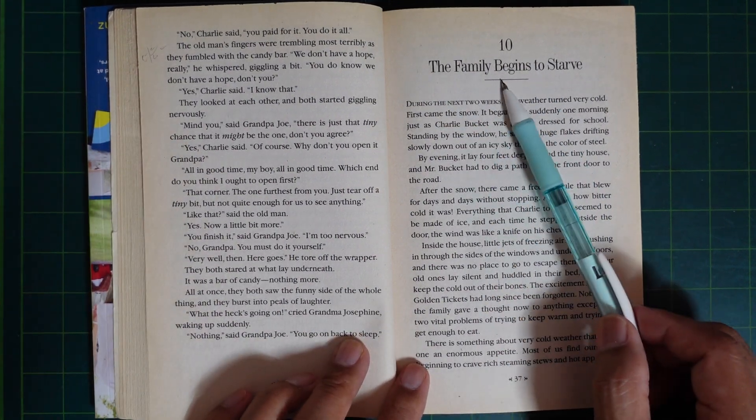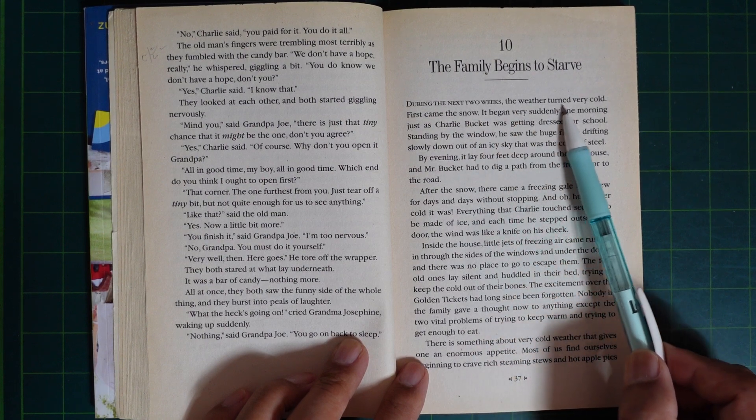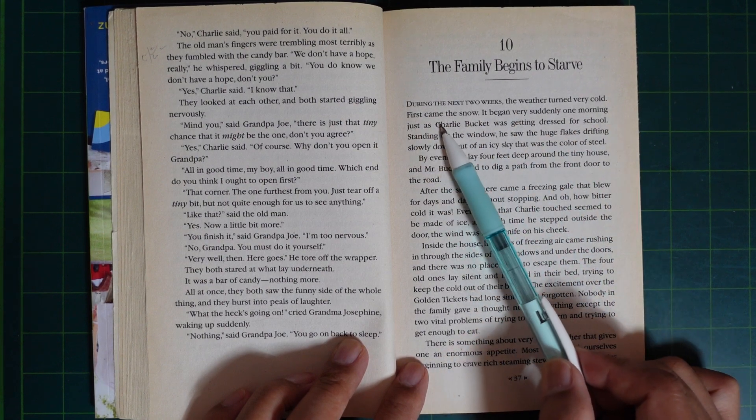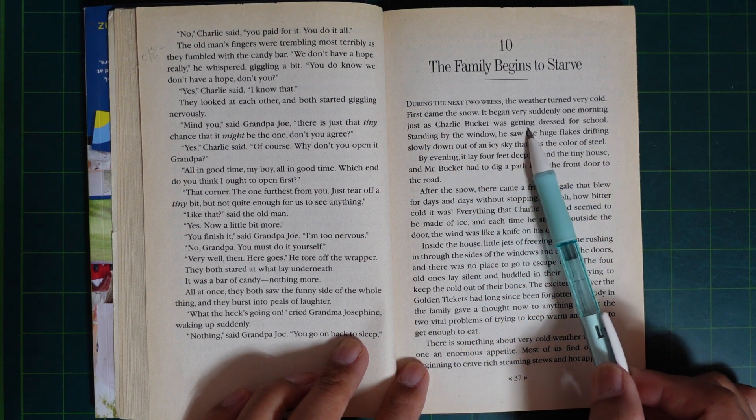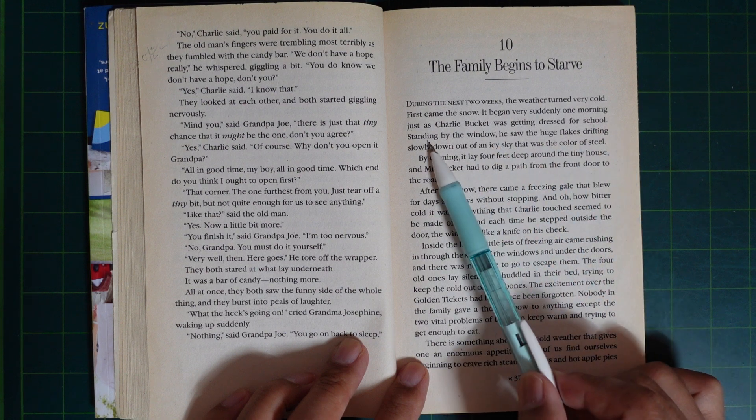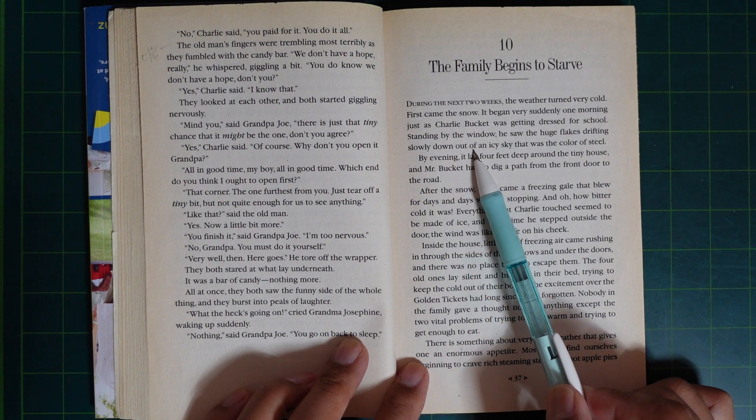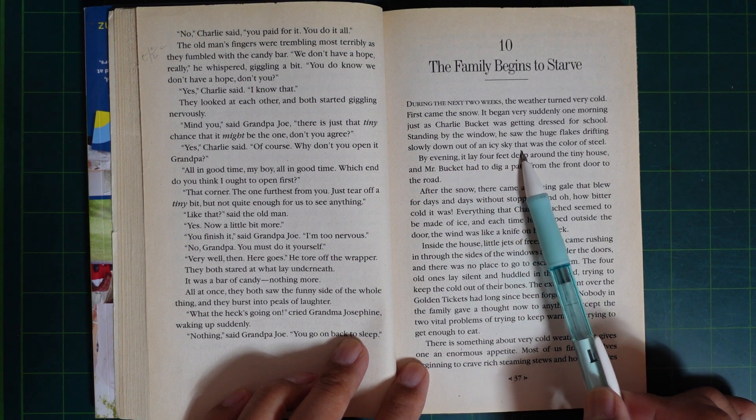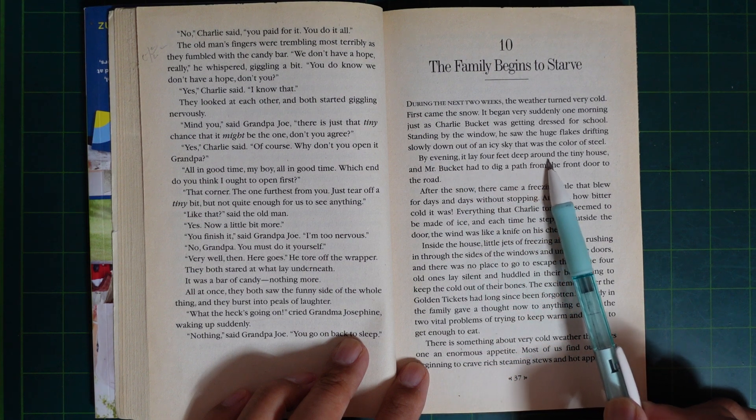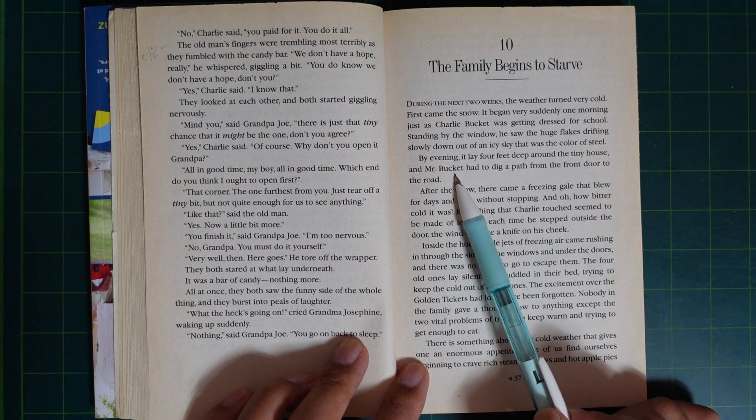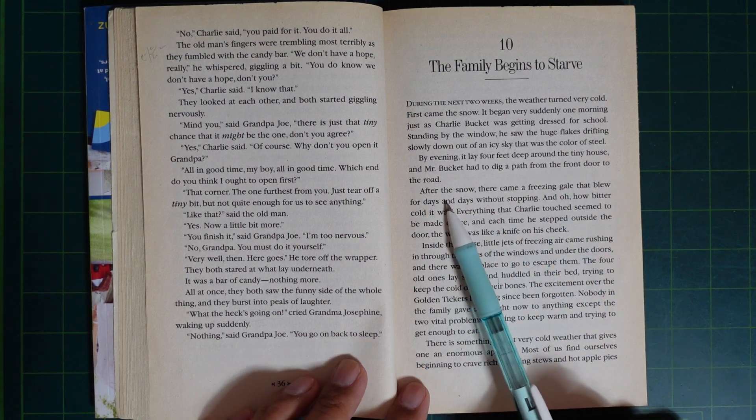Chapter 10: The Family Begins to Starve. During the next two weeks, the weather turned very cold. First came the snow. It began very suddenly one morning, just as Charlie was getting dressed for school. Standing by the window, he saw the huge flakes drifting slowly down out of an icy sky the color of steel. By evening, it lay four feet deep around the tiny house, and Mr. Bucket had to dig a path from the front door to the road.